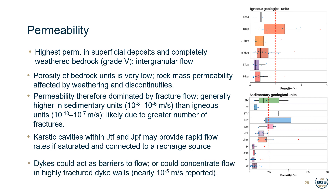Carbonate rocks within the Pandan and Tuas formations can contain karstic features which, if saturated and connected to a source of recharge, may provide very rapid flow rates. Another source of localised variation in permeability will be dykes, found in both igneous and sedimentary bedrock units. These can act as barriers to groundwater flow, but where dyke margins are highly fractured they could concentrate groundwater flow, with higher permeabilities approaching 10⁻⁵ metres per second recorded.